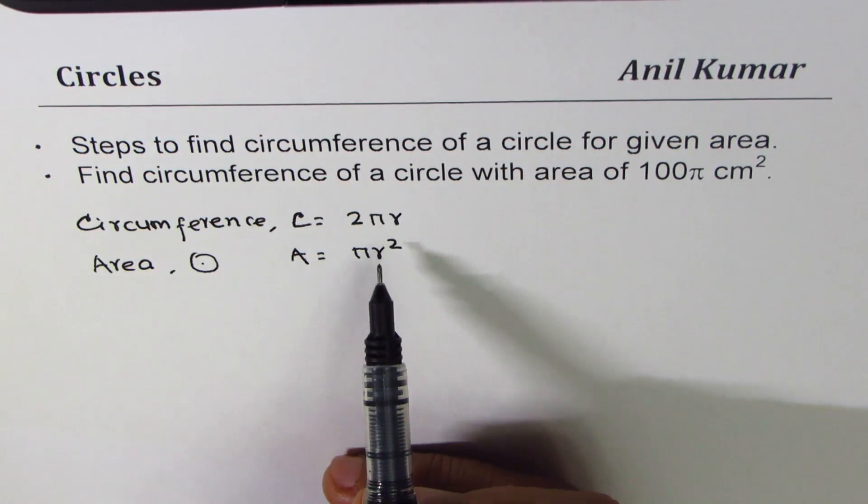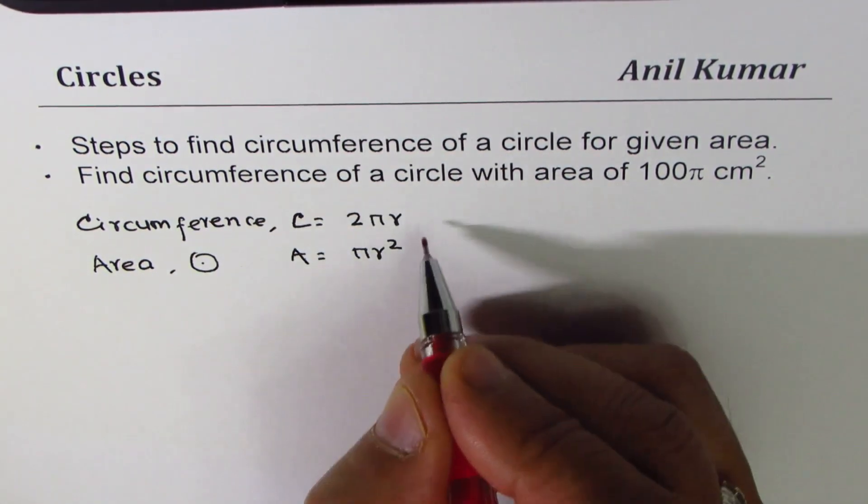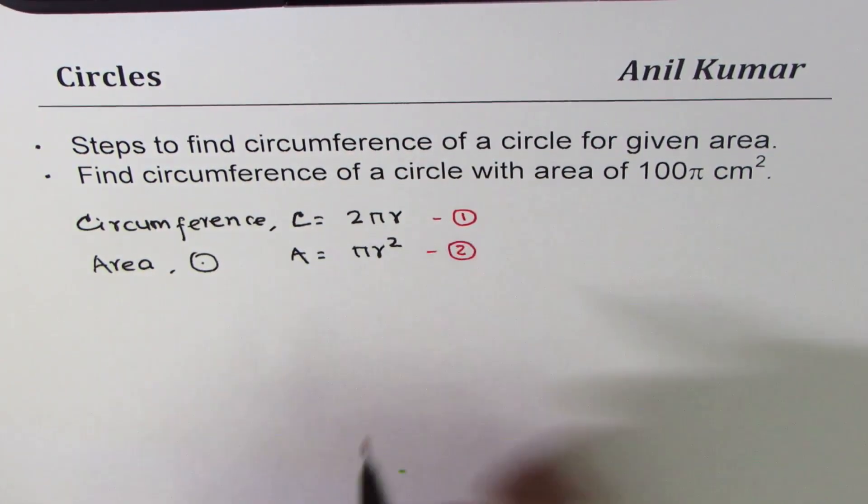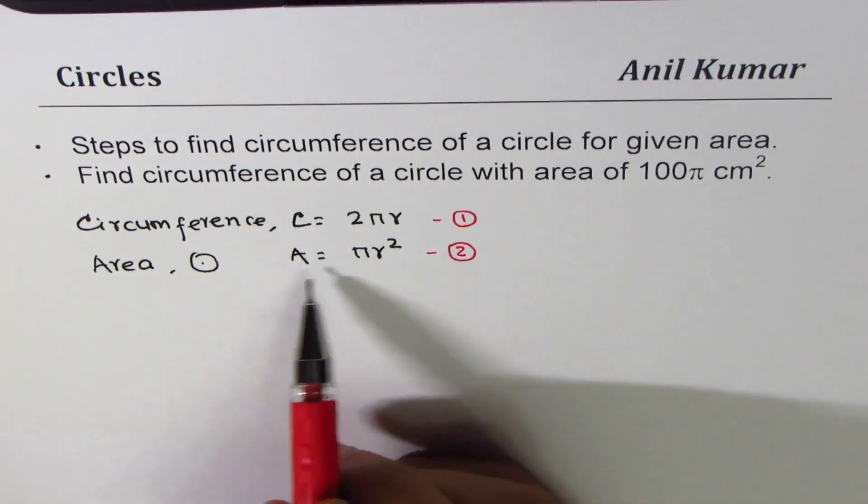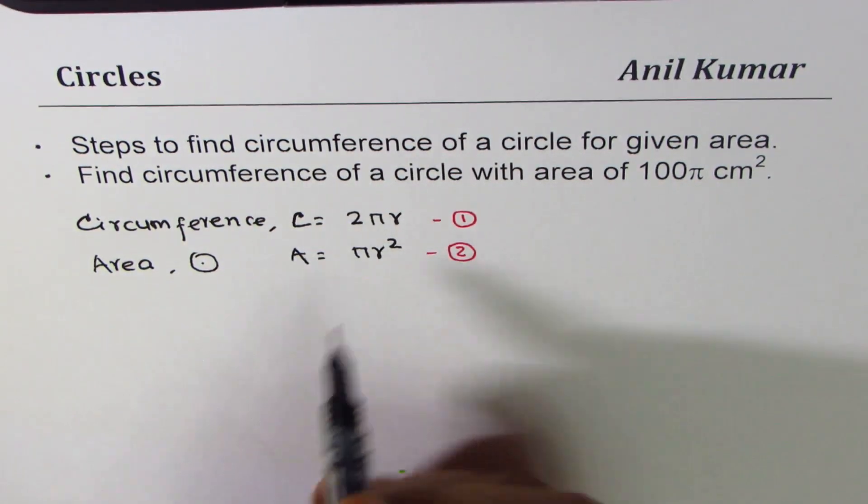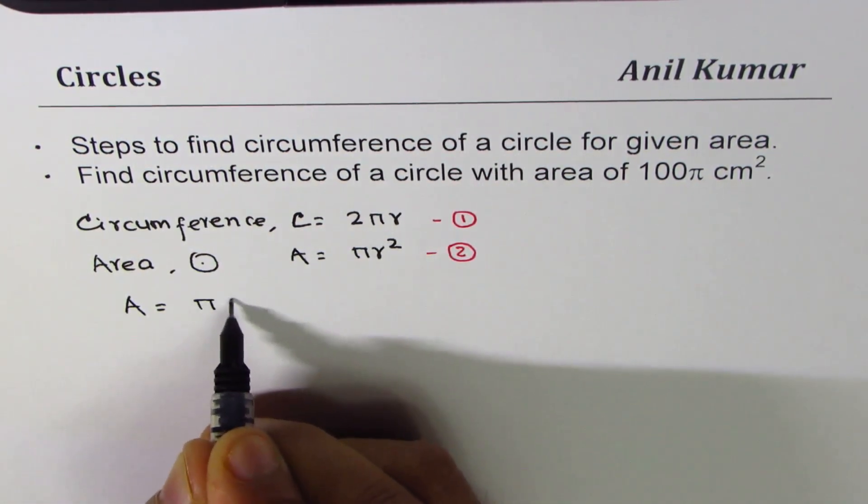I hope you got this strategy, right? So we will work with the second equation. Let's call them equation number 1 and 2. So this is equation number 1 for us. This is for 2. So we will try to relate r with area or reorganize or isolate r. So we are working with A = πr².